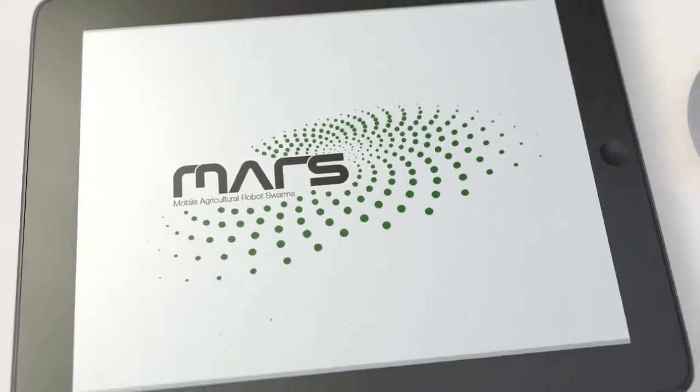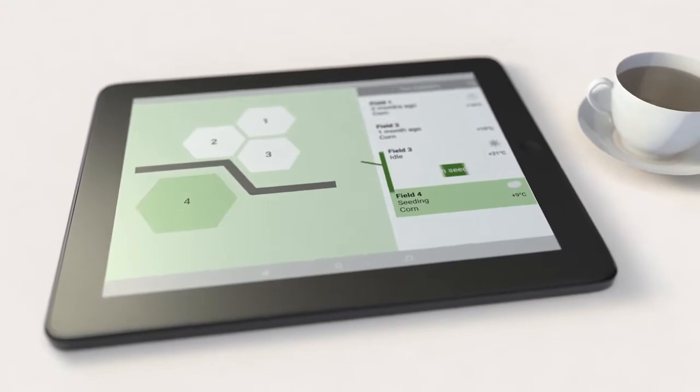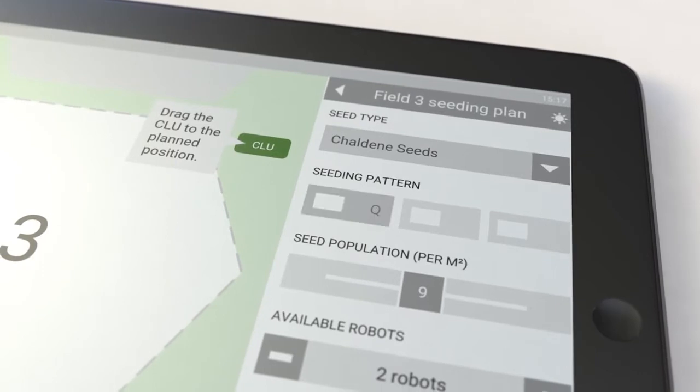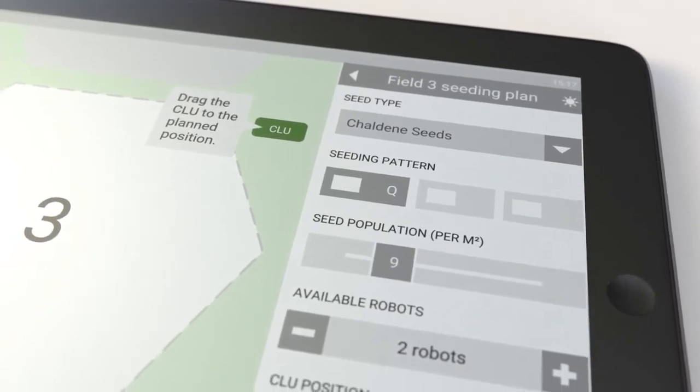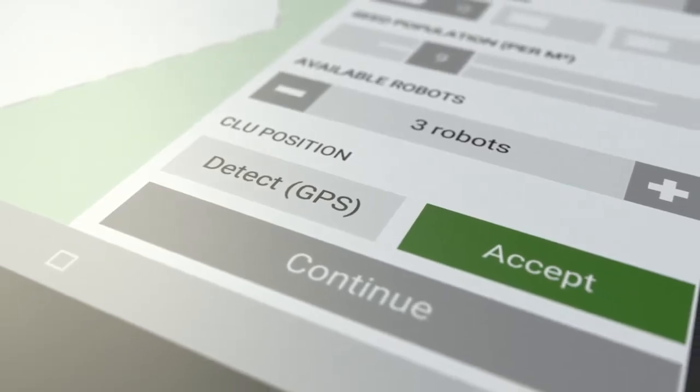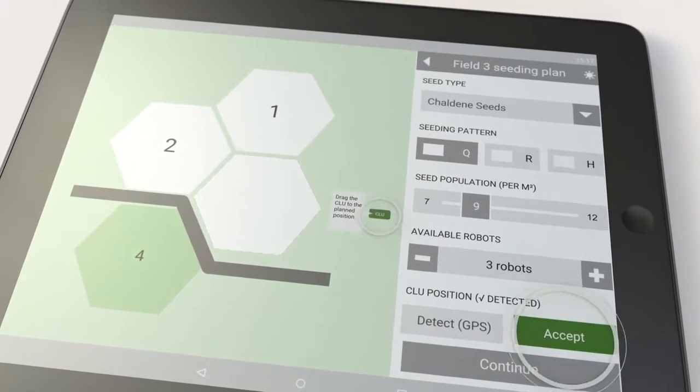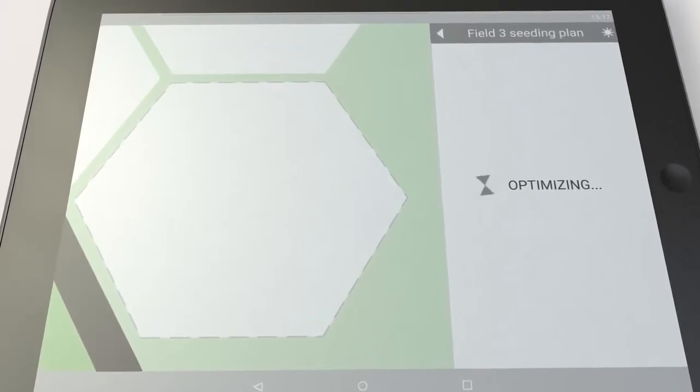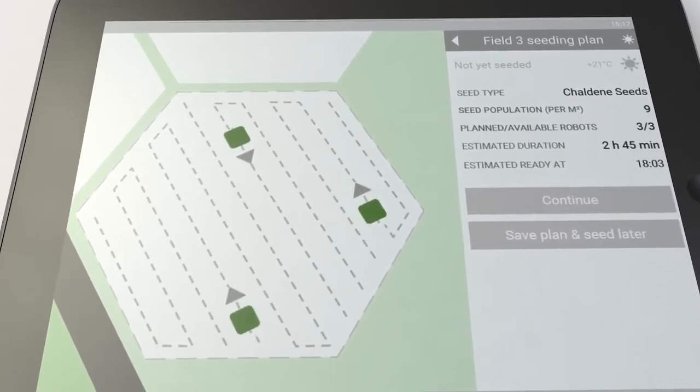How does it work? Select a field on the MARS app, adjust parameters like seed type, seeding pattern, and seed population, and select the number of robots you are planning to use. After defining the position of the logistic unit, MARS automatically plans the whole process and calculates the needed time.